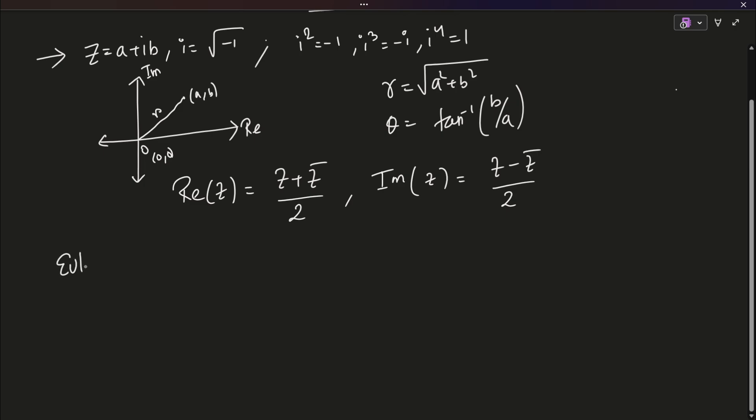I will introduce you basically the Euler's identity and what it does. Euler's identity is this or you can actually call this Euler's formula. It is basically saying that E to the power i theta is equals to cos theta plus i into sin theta.